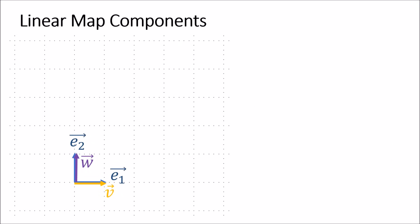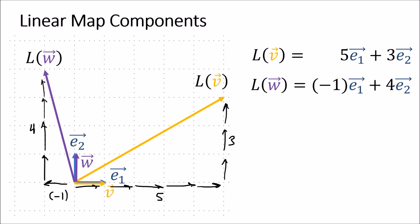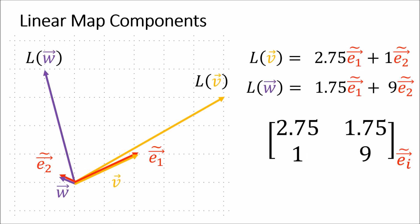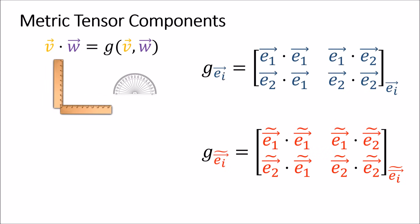Linear map components are obtained by taking copies of basis vectors, transforming them with the linear map, and then measuring the components of the output vectors using the basis. Usually we store the components of a linear map inside a matrix. Metric tensor components are obtained by taking the dot products of all the basis vectors with one another and storing the results in a matrix.